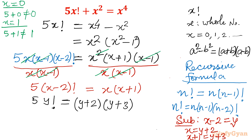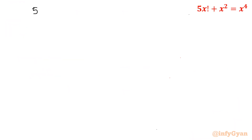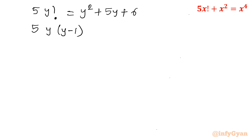Expanding the right hand side: (y+2)(y+3) = y² + 3y + 2y + 6 = y² + 5y + 6. So we have 5·y! = y² + 5y + 6. Now applying the recursive formula to the left hand side, y! = y·(y-1)!, so this becomes 5·y·(y-1)! = y² + 5y + 6.